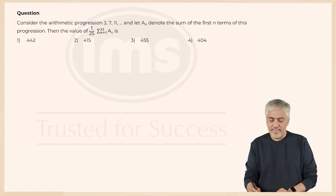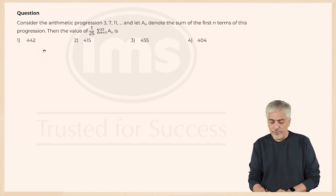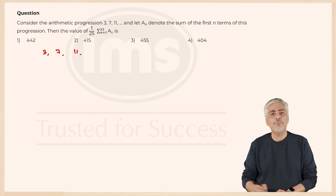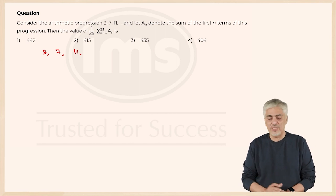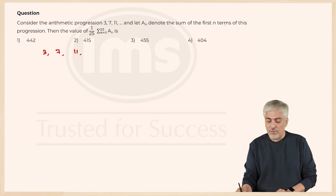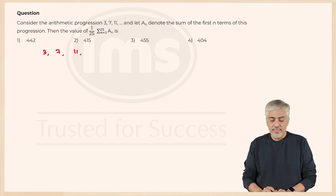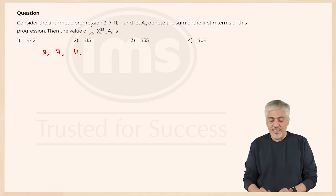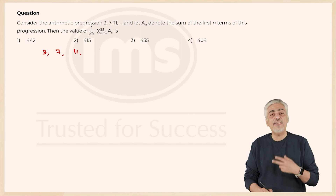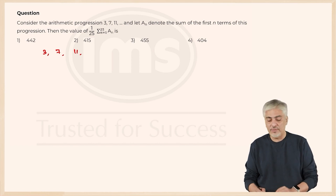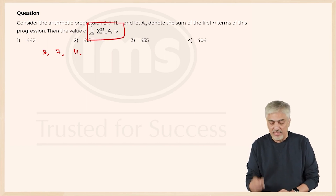The next question talks about an arithmetic progression 3, 7, 11 — a standard AP where the first term is 3 and common difference is 4. Let aₙ denote the sum of the first n terms (instead of Sₙ, they are using aₙ). The value of (1/25) × Σaₙ for n = 1 to 25 is asked. This is where the question gets difficult.